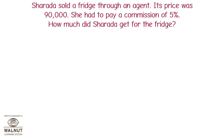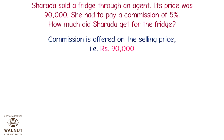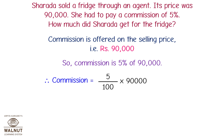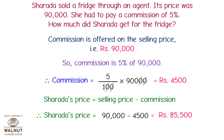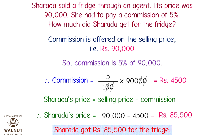Sharda sold a fridge through an agent. Its price was Rs. 90,000 and she had to pay a commission of 5%. How much did Sharda get for the fridge? Commission is offered on the selling price of Rs. 90,000. Commission = 5% of Rs. 90,000 = 5/100 × 90,000 = Rs. 4,500. Sharda's price = selling price − commission = Rs. 90,000 − Rs. 4,500 = Rs. 85,500. Therefore, Sharda got Rs. 85,500 for the fridge.